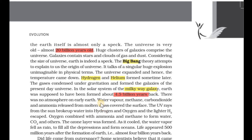There was also a gas cell containing hydrogen, nitrogen, and ammonia. There was also hydrogen, carbon, and methane. There was hydrogen, oxygen, and water. There was also carbon dioxide. So 4.5 billion years back, the primitive atmosphere consisted of ammonia, carbon dioxide, methane, and water.